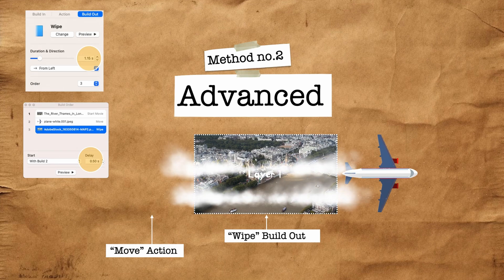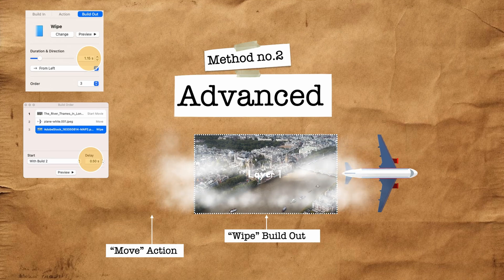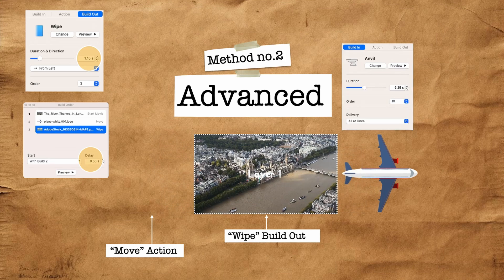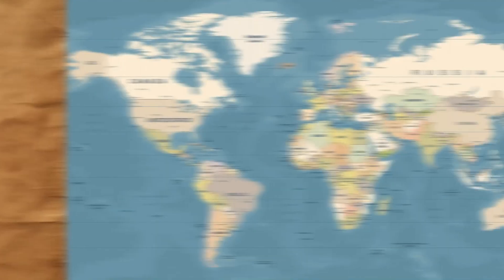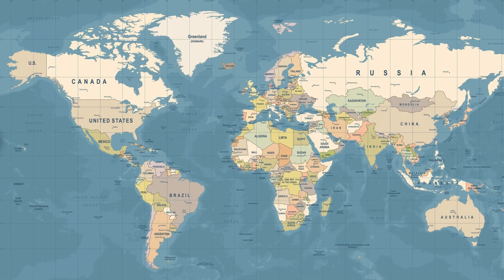First I'll show you the simpler way without the contrail effect. The contrail effect uses an anvil animation with the shape's opacity turned down completely to invisible. I'll show you how to do both.